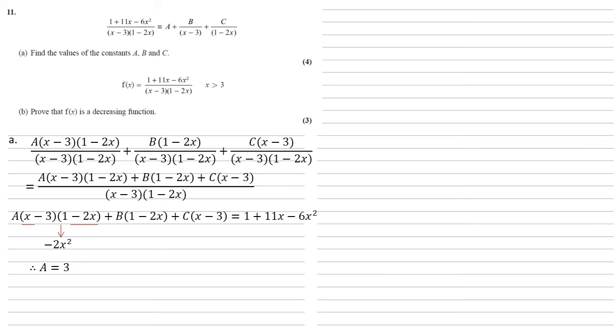Now to find b, if we let x equal 3, this will mean the two brackets where we've got (x - 3) will be equal to 0, hence the first and third terms on the left will disappear. So we're just left with b(1 - 2×3), and putting 3 in the right-hand side we get 1 + 11×3 - 6×3² which gives us -5b = -20, so b is equal to 4.